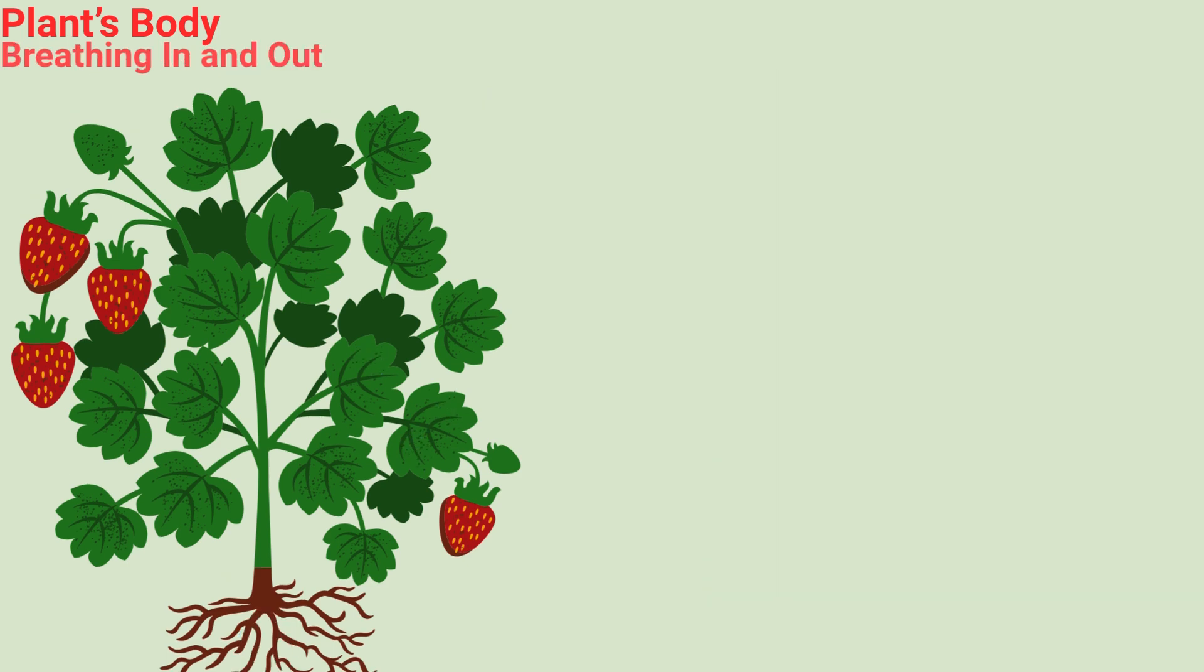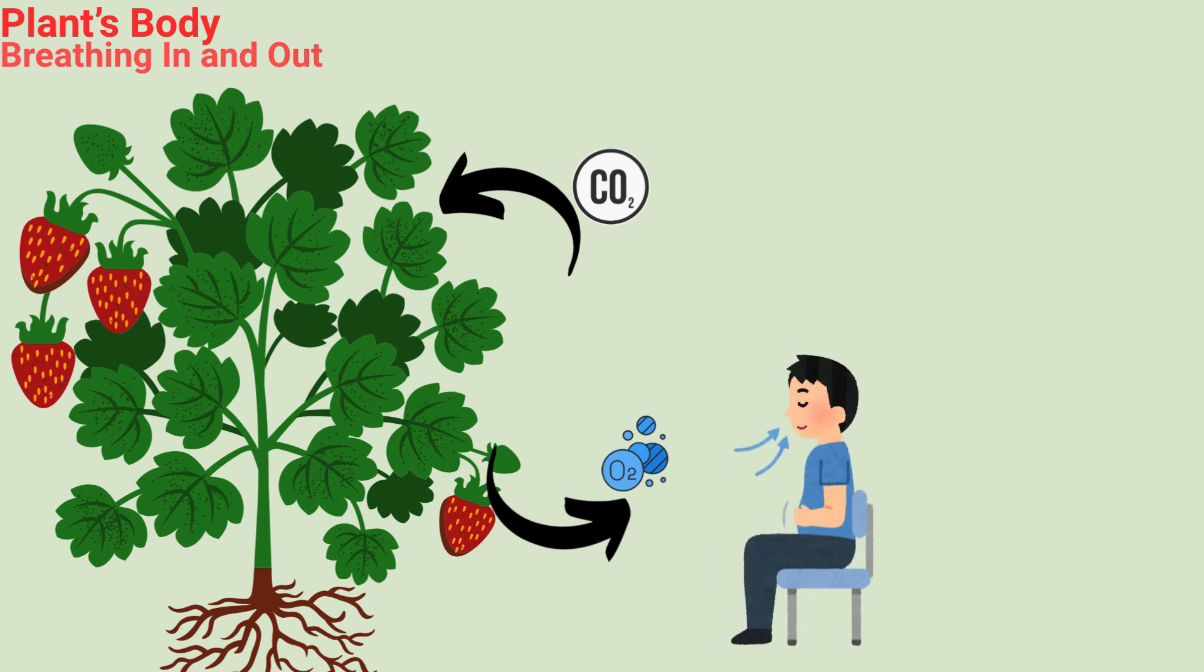Breathing in and out. CO2 and O2. Plants take in carbon dioxide from the air. They release oxygen, which humans and animals need to breathe. It's like plants are giving us free fresh air every day.